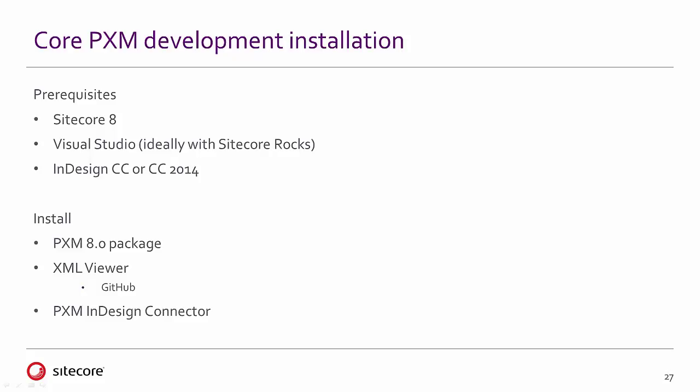We'll be going through a few steps. We'll be installing the PXM 8 package onto Sitecore, installing the XML Viewer — which we'll obtain from GitHub, with the link on the YouTube page — and lastly selecting and installing the correct InDesign connector, then verifying the installation.